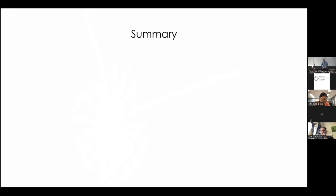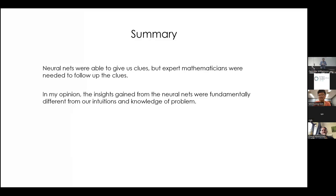So, I hope that these three examples have illustrated some uses, potential uses of machine learning, as a tool for mathematicians. I just want to emphasize the following points. So neural nets were able to give us clues, but expert mathematicians were needed to follow up the clues. So in the Bruhat graph project, for example, we got this clue about these subgraphs, but it took me about nine months to work out what was going on. So there's still a lot of human work involved. So this is a totally subjective personal opinion, but the insights gained from the neural nets were fundamentally different from intuitions and knowledge of the problem. It was suggesting a different avenue of research to what I would traditionally follow.